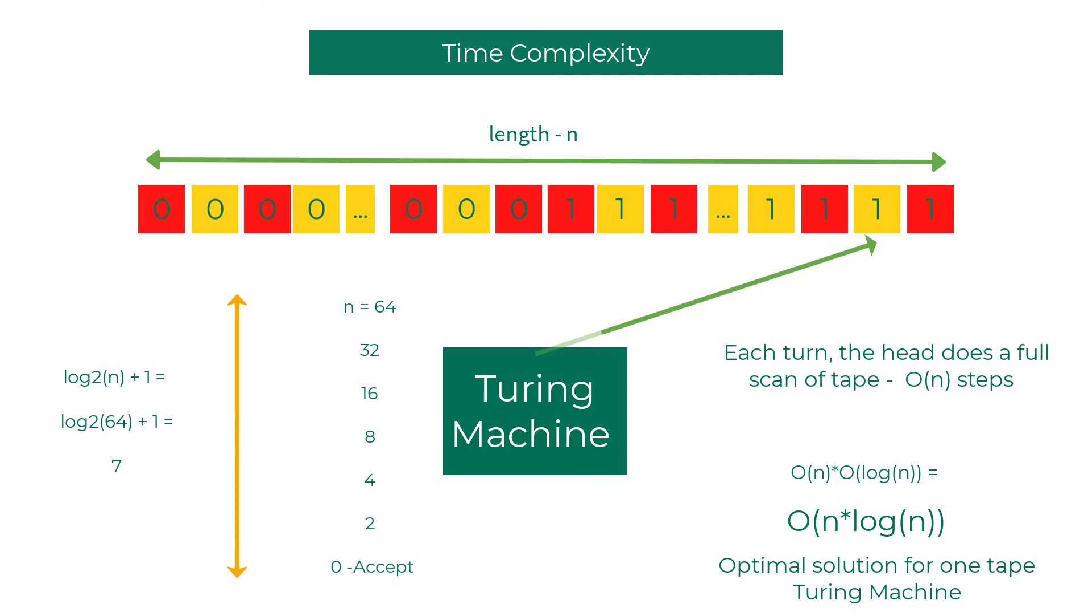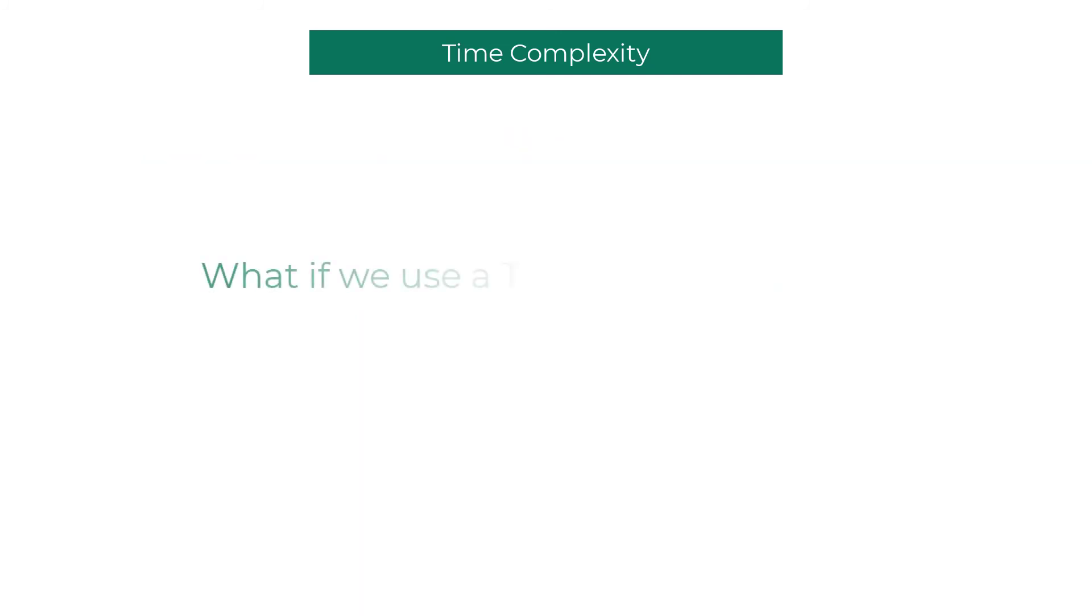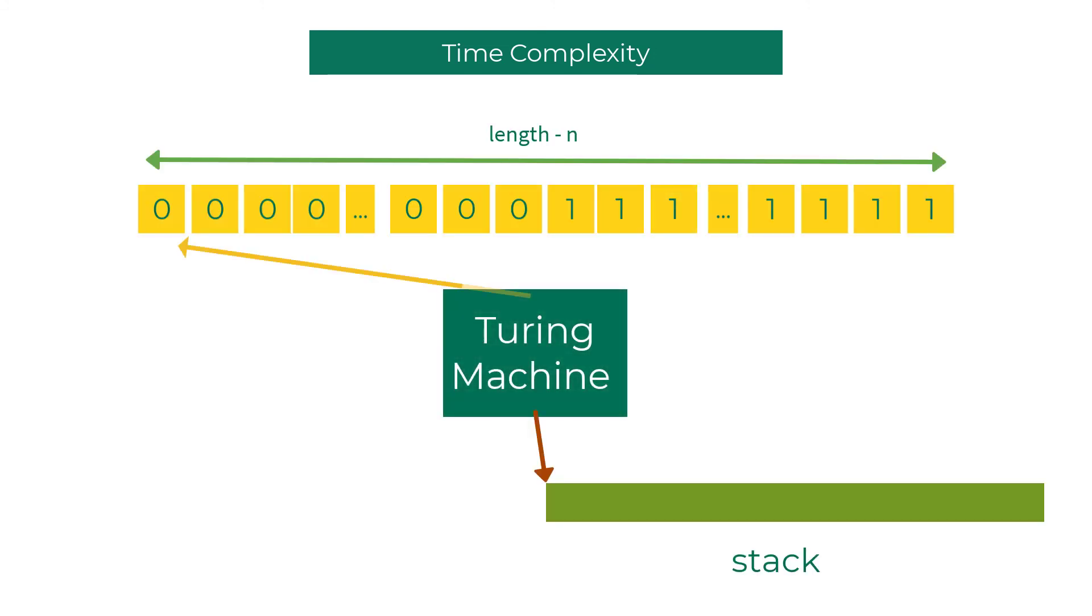Okay, so let's see what happens if we add an extra tape to this Turing machine and see if we can speed up the computation. This is very similar to adding extra RAM in your computer. The strategy is that we're going to use the extra tape as a stack. We're going to push all the zeros and pop them out when we see a one. Now this two-tape Turing machine runs in O of n, so we can say it runs in linear time.